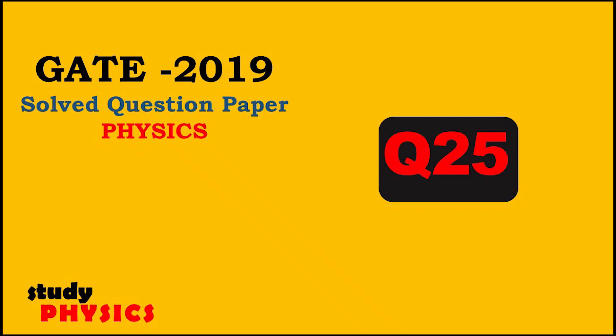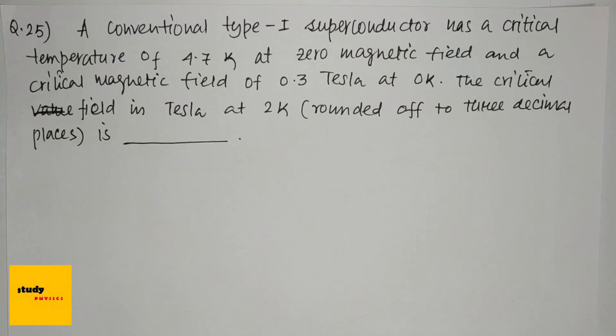Hi everyone, welcome to Study Physics. Here's question 25: A conventional type-1 superconductor has a critical temperature of 4.7 kelvin at zero magnetic field and a critical magnetic field of 0.3 tesla at zero kelvin.